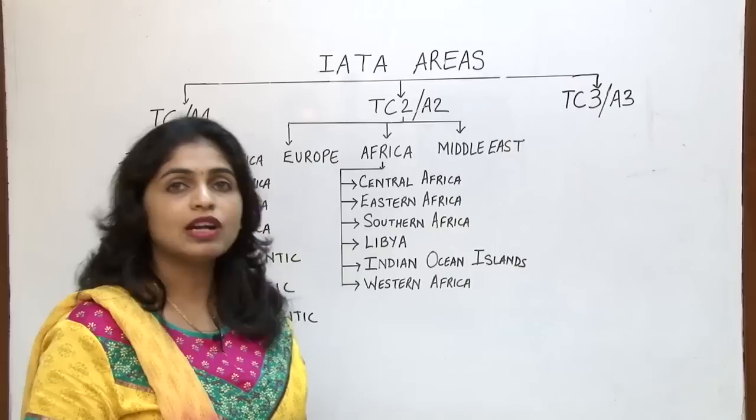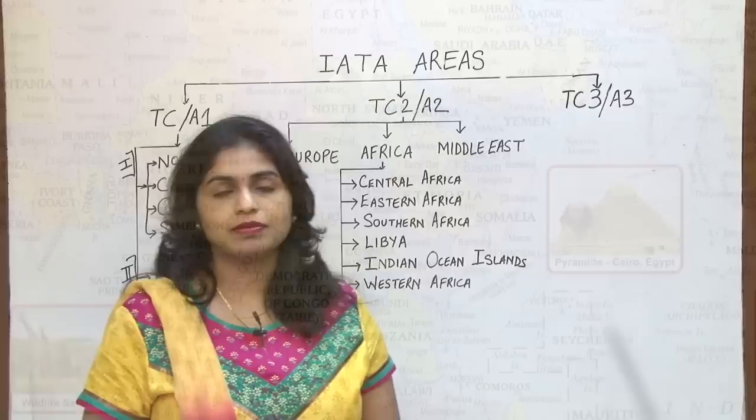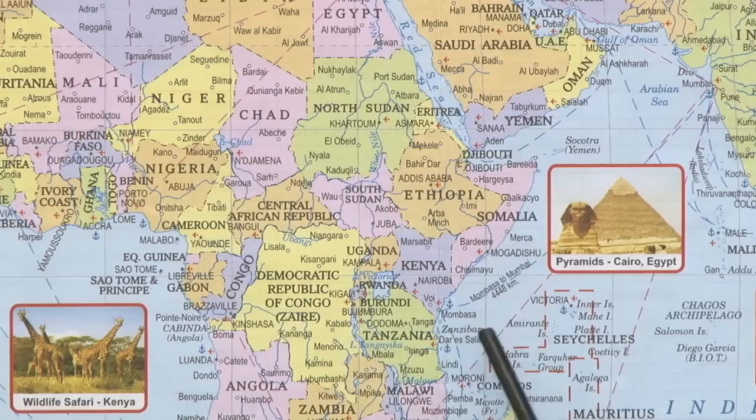Let us now concentrate on the list of countries under Eastern Africa. These are the countries located under Eastern Africa — as you can see, it will be on the eastern side of the African continent up to Tanzania.